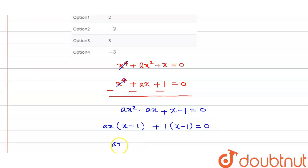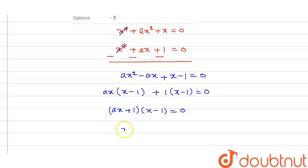So you have ax plus 1 into x minus 1 is equal to 0. So x is equal to 1 and another is x is equal to minus 1 by a.